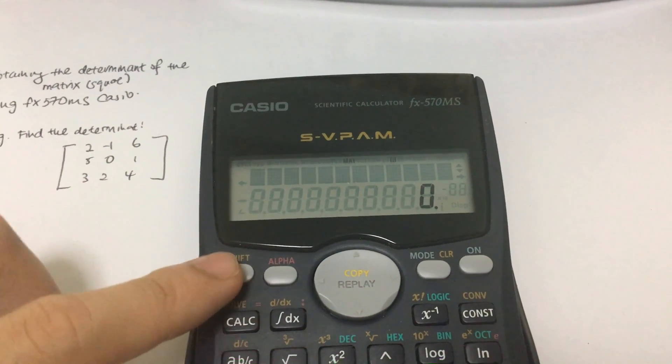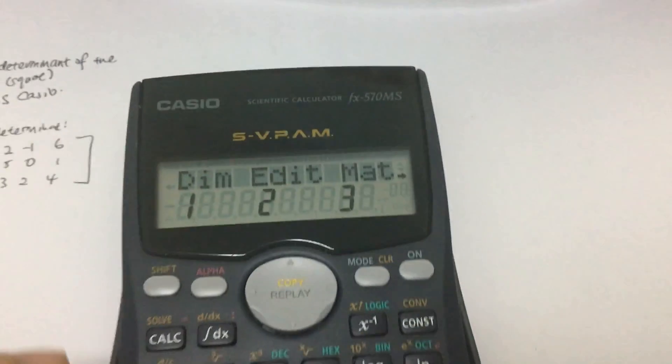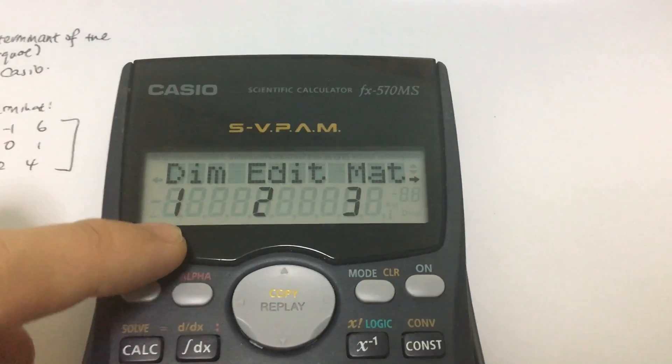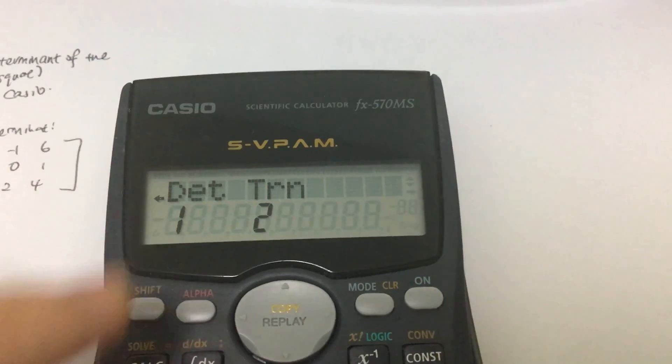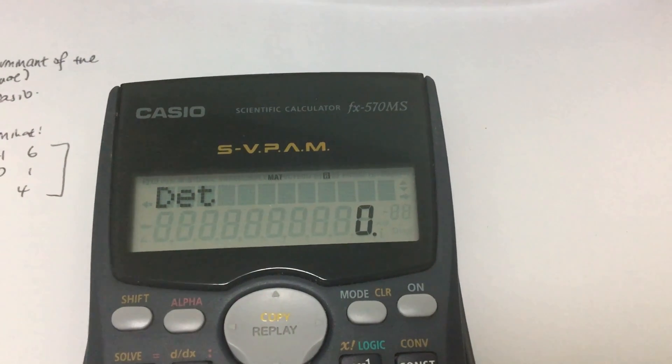the next thing we have to do is to press shift, and then press this mat thing, and you will get back to the menu itself, click on the right arrow, and this thing called determinant, just press determinant.